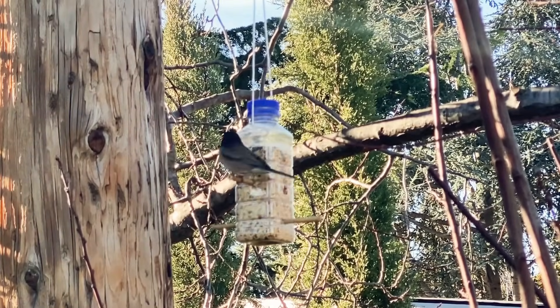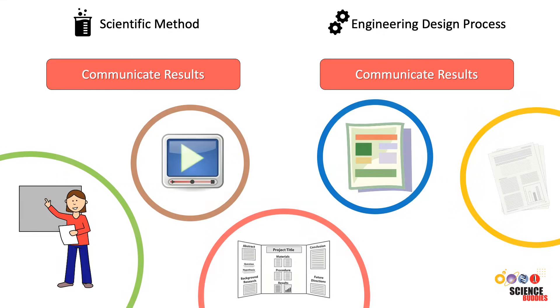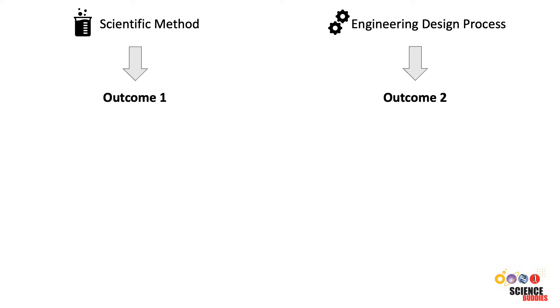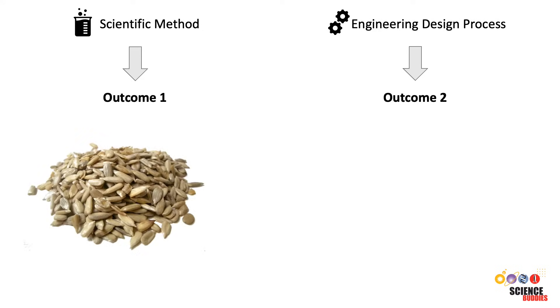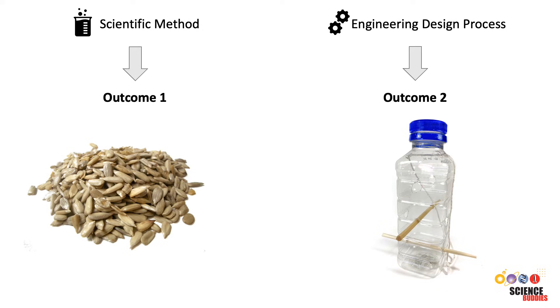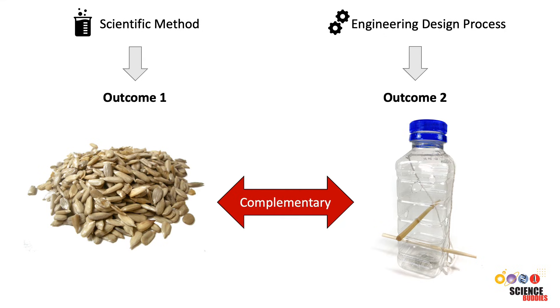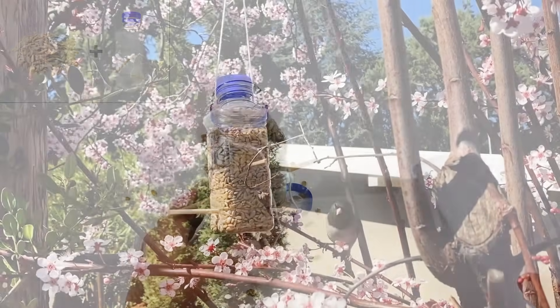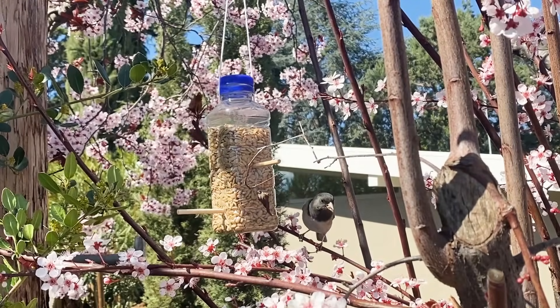The last step for both processes is communicating our findings. Sharing our results allows others to use the information we uncovered to continue to discover more about feeding backyard birds and building the best bird feeder. Now that we have completed our bird project, we find that we ended up with two different outcomes. By using the scientific method, we understand which food is best to attract the most birds, and by using the engineering design process, we designed a good bird feeder for our yard. You might notice that the two processes are complementary — although the outcomes are different, together they lead to more birds that we can observe and enjoy.